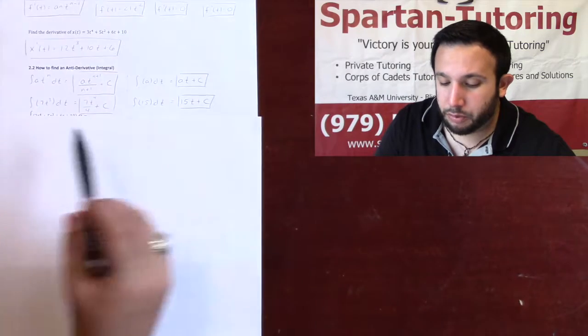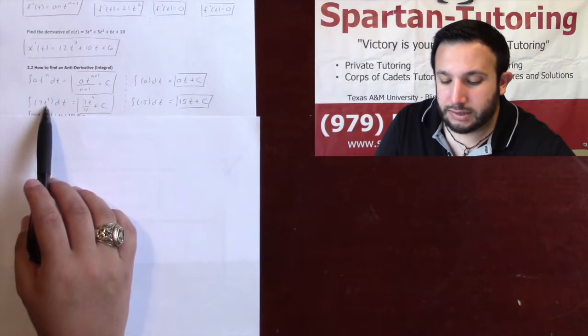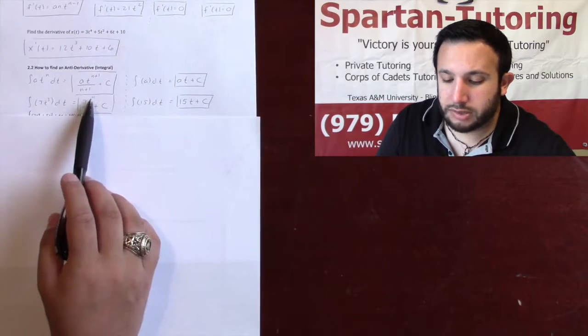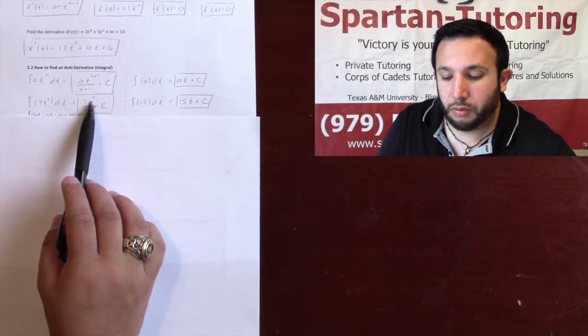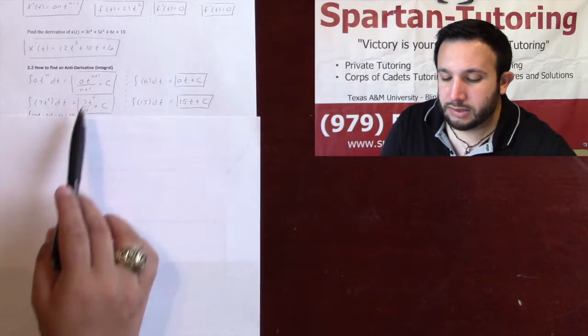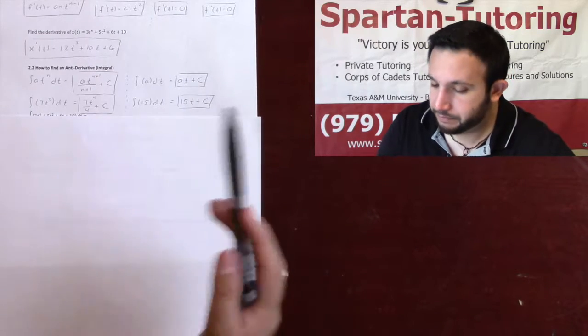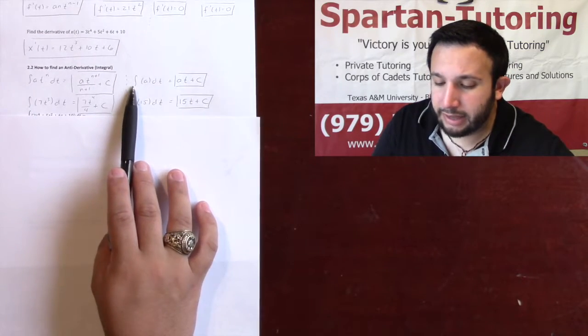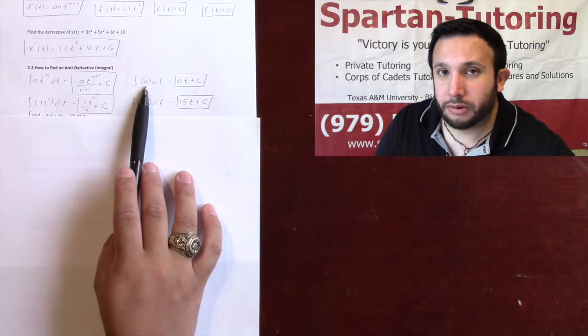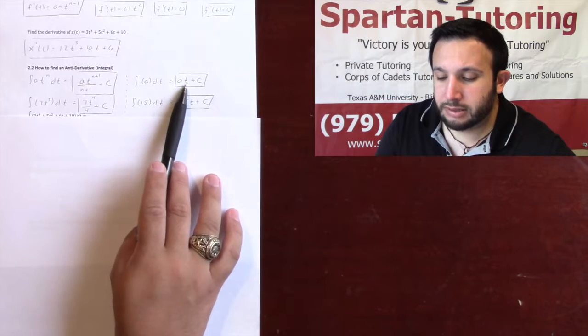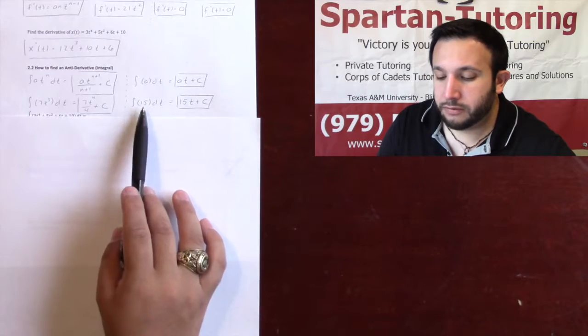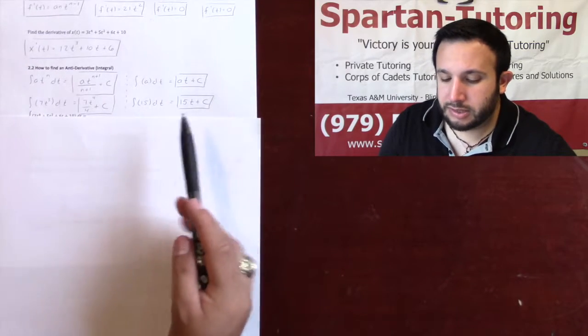But anyways, let's go through an example real quick. Say I wanted to integrate 7t cubed. All you have to do is add 1 to the top, 3 plus 1 is 4, take that number and then just divide it. So it would be 7t to the 4th divided by 4, and as always, plus c. Finally, the antiderivative of any number is just that number times t plus c. So the integral of 15 is simply 15t plus c.